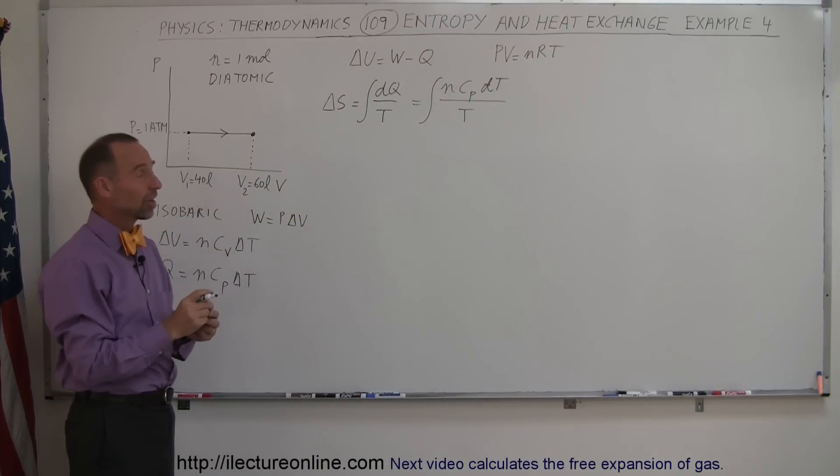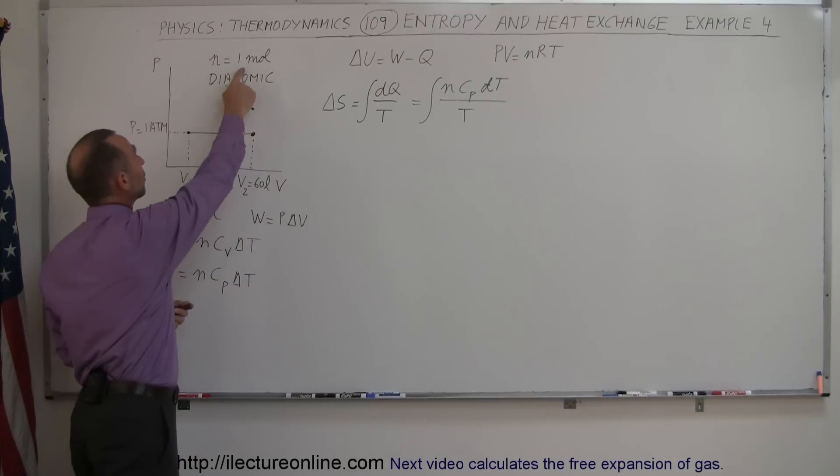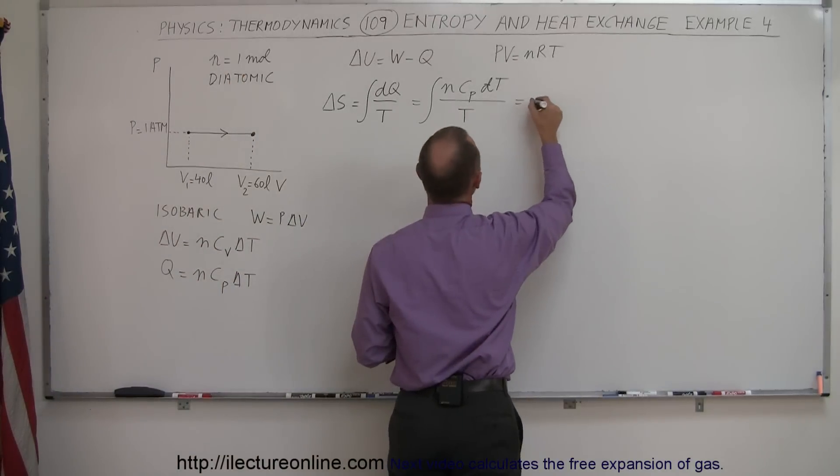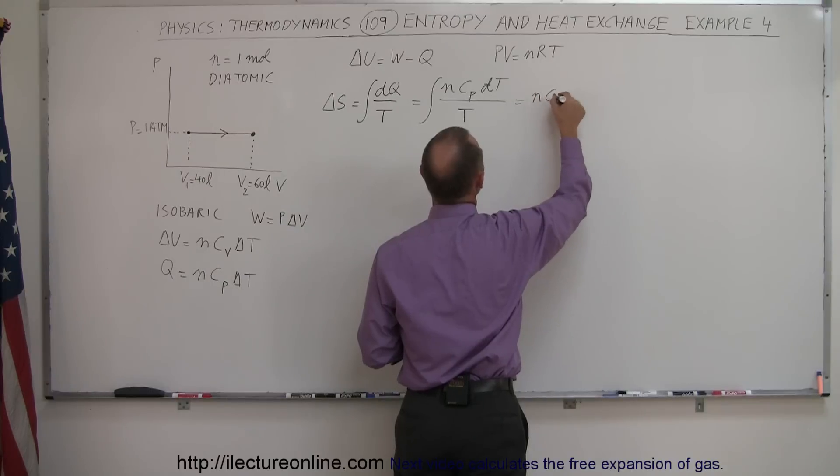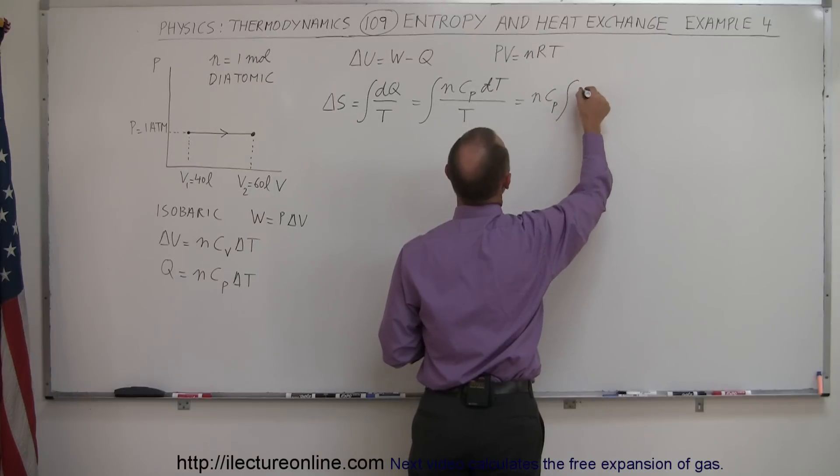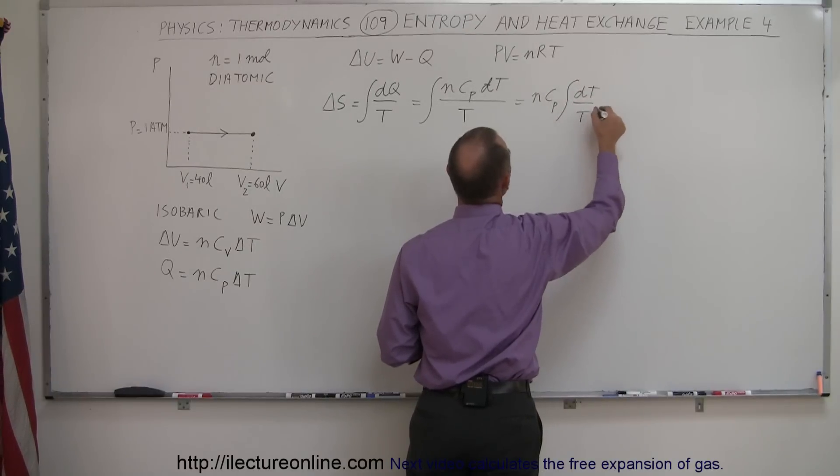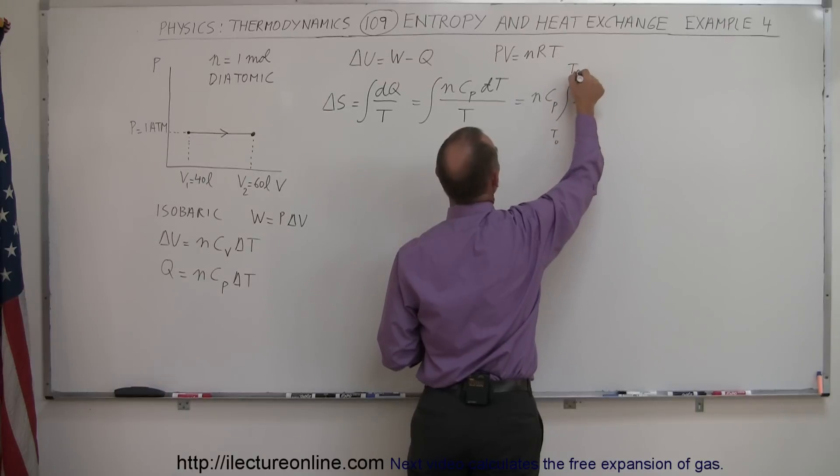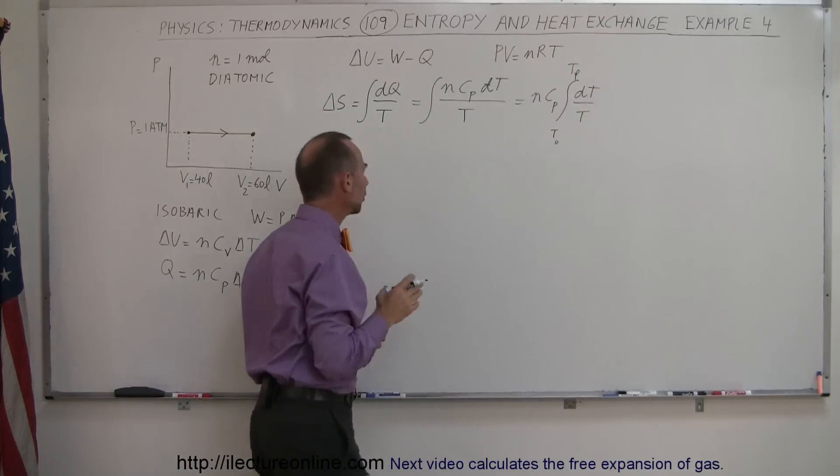But in the meanwhile, we know that N is a constant, C is a constant. We know N is one mole, it's a diatomic gas, so we can take that outside integral sign. So this is equal to N C_P times the integral of DT over T from T_0 to T_f, so T initial to T final.